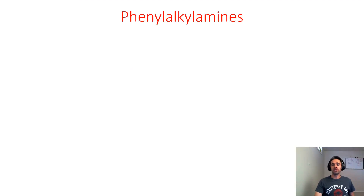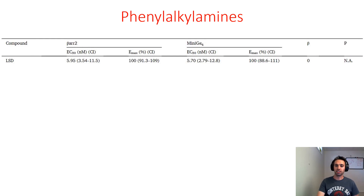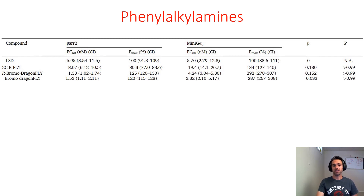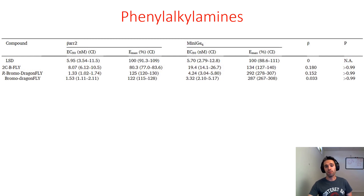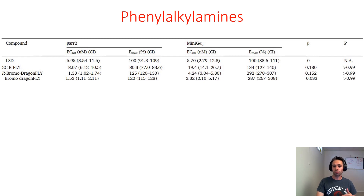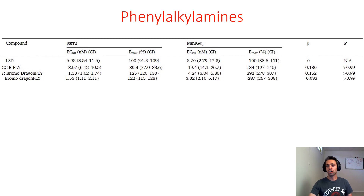The results of the phenylalkylamine compounds are as follows, with LSD as a reference compound. Comparing 2CB-fly, R-bromo dragonfly, and bromo dragonfly: at the beta-arrestin pathway the EC50 of 2CB-fly is 8.07, compared to R-bromo dragonfly and bromo dragonfly with EC50 values of 1.33 and 1.53 — indicating that substitution increases potency by about six-fold, which is pretty substantial. The Emax comparing 2CB-fly to R-bromo dragonfly and bromo dragonfly in the beta-arrestin pathway goes from about 80 to 125, so we are increasing both the potency and the efficacy of the drug.